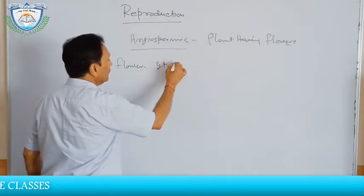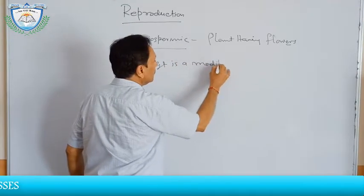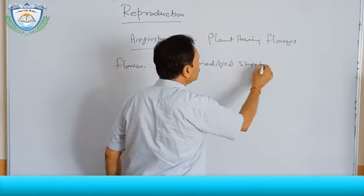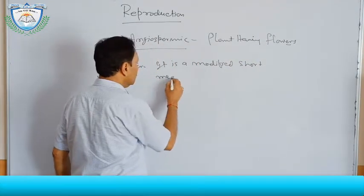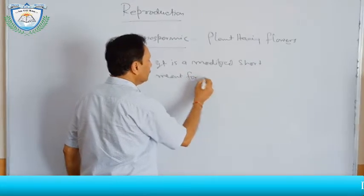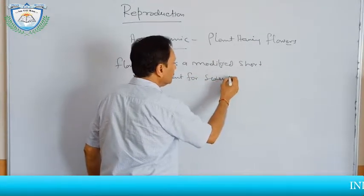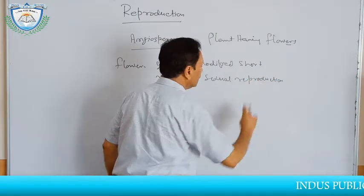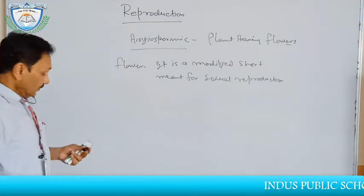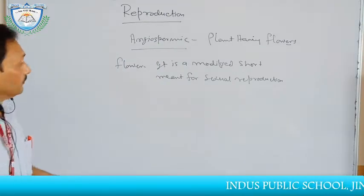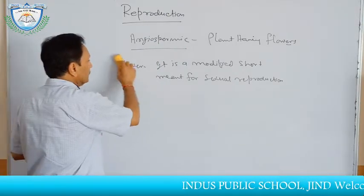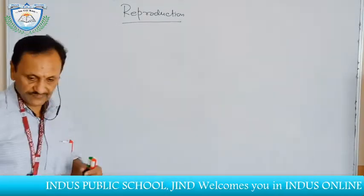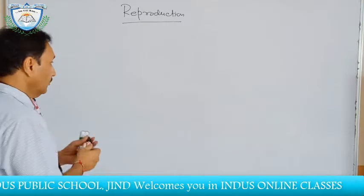The flower is a modified shoot responsible for sexual reproduction. Now we will discuss the typical flower — what is a flower, what are its parts, and how many types of flowers are there.